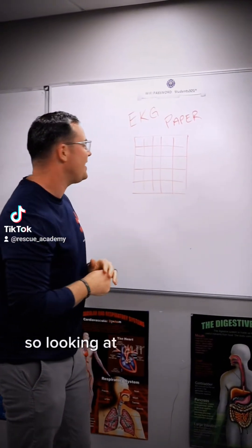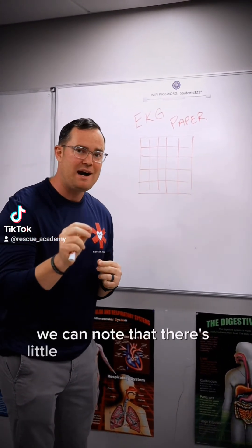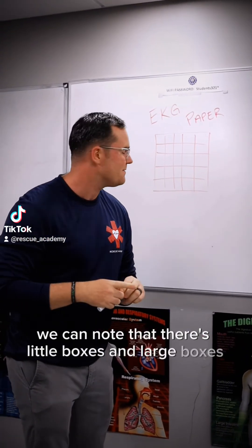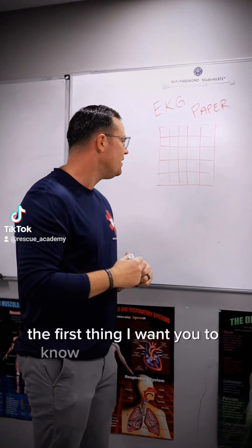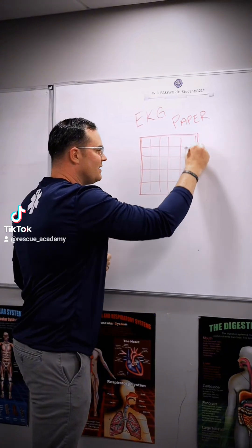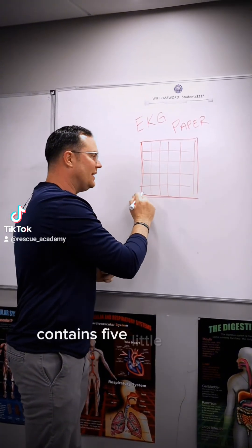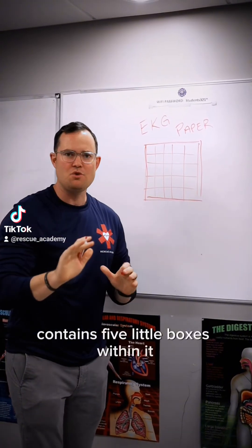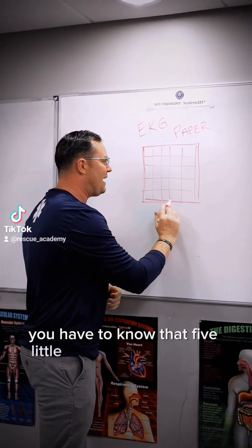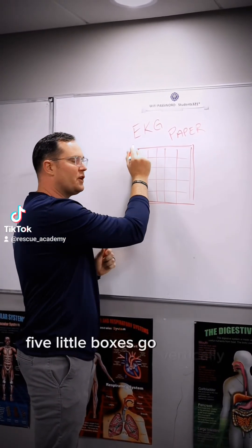Looking at our EKG paper, we can note that there are little boxes and large boxes. Every large box contains five little boxes within it — you have to know that. Five little boxes go horizontally and five little boxes go vertically.